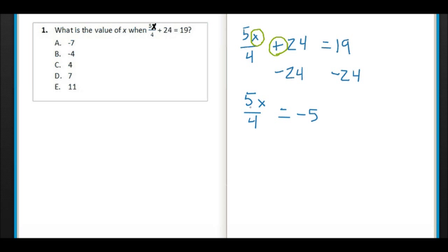Now look at what we got. We've got a fraction, and one thing you may know about fractions is that the numerator can always be considered to be divided by the denominator, the bottom number. So since 5X is being divided by 4, we will multiply by 4.